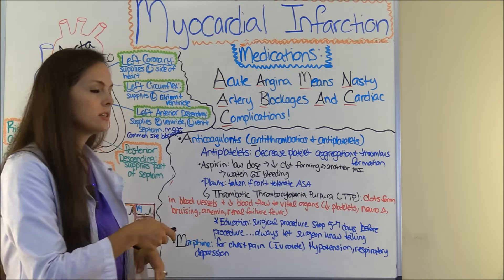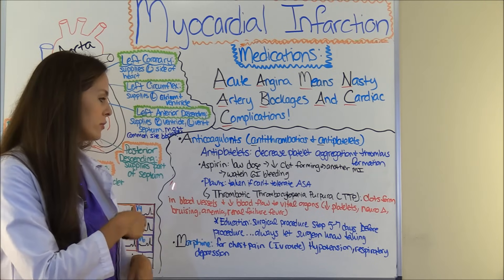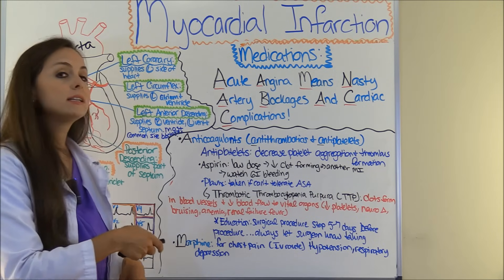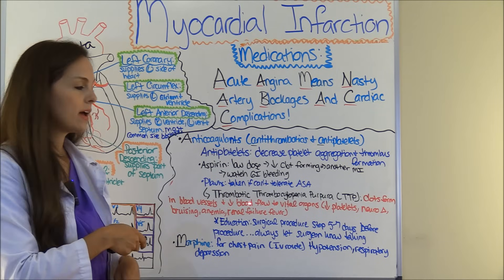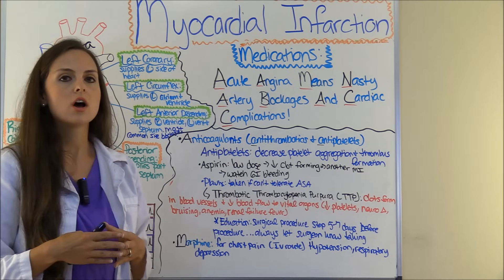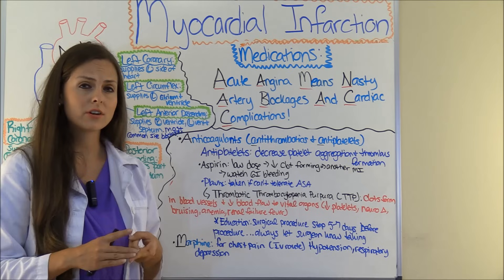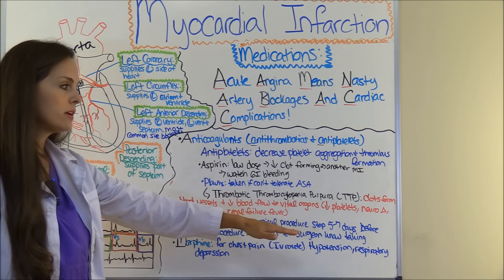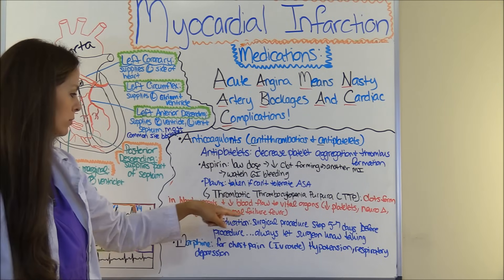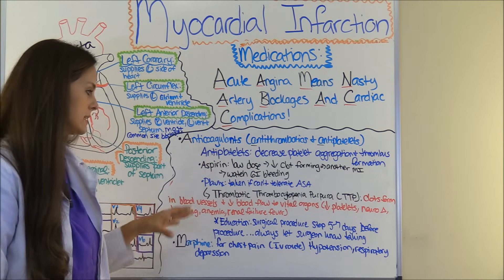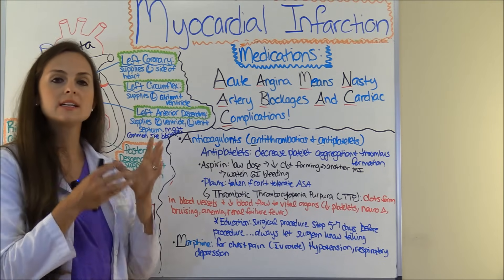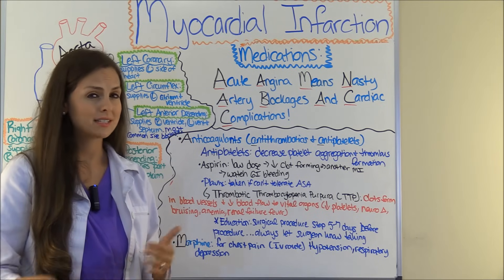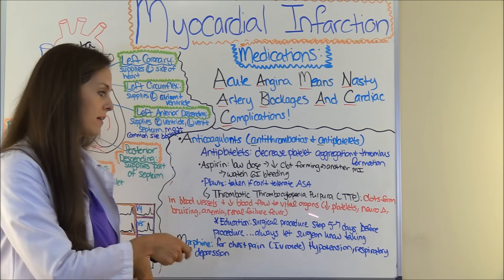Another antiplatelet is Plavix, often prescribed if the patient can't tolerate aspirin. As the nurse, remember that patients can develop a complication known as thrombotic thrombocytopenic purpura, or TTP, where clots form in small vessels and decrease blood flow to vital organs. You may see decreased platelets, sudden neuro changes, renal failure, fever, anemia, or bruising. Educate the patient to report confusion, fever, or inability to urinate. Also, if a surgical procedure is scheduled, they must tell their surgeon they take Plavix — it takes up to five to seven days to clear, so they can't just stop the day before surgery.